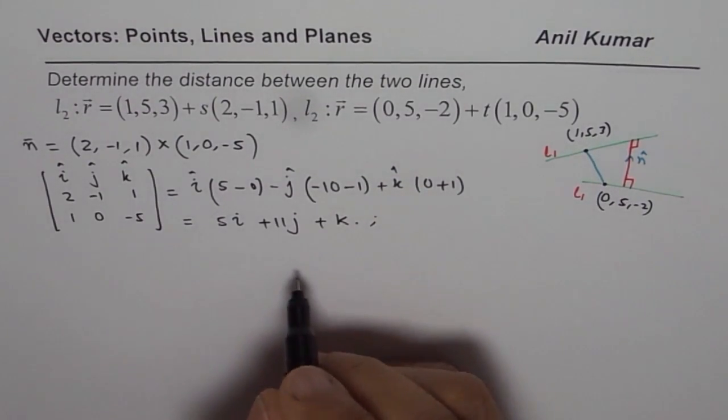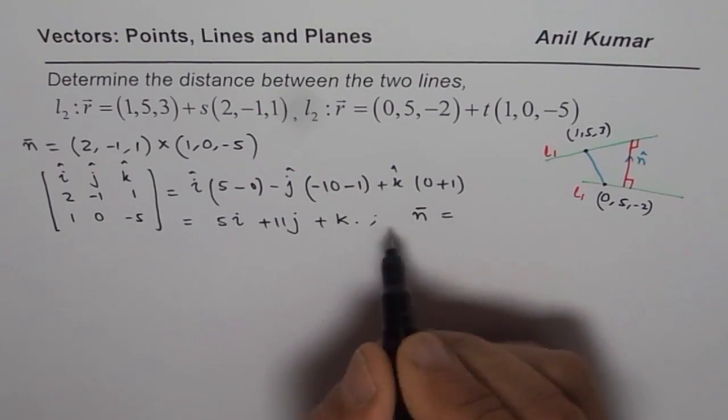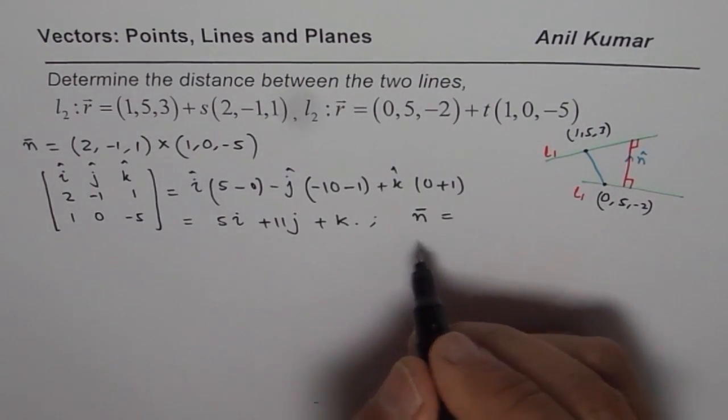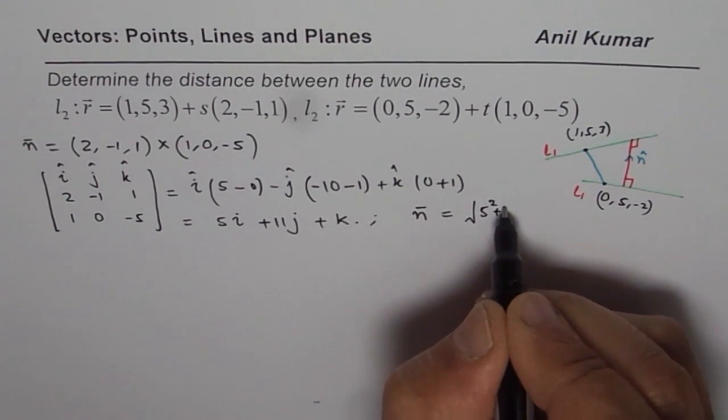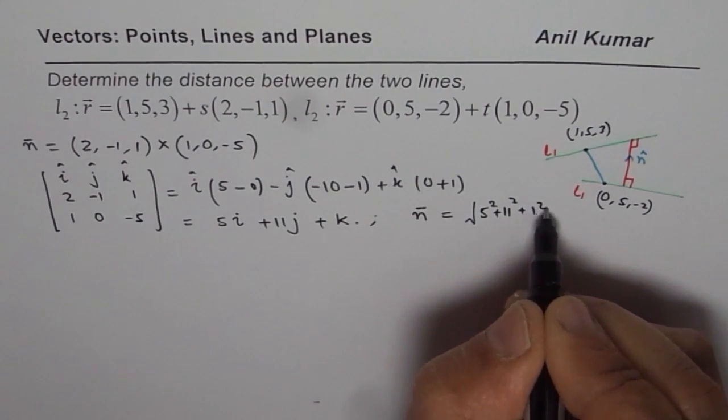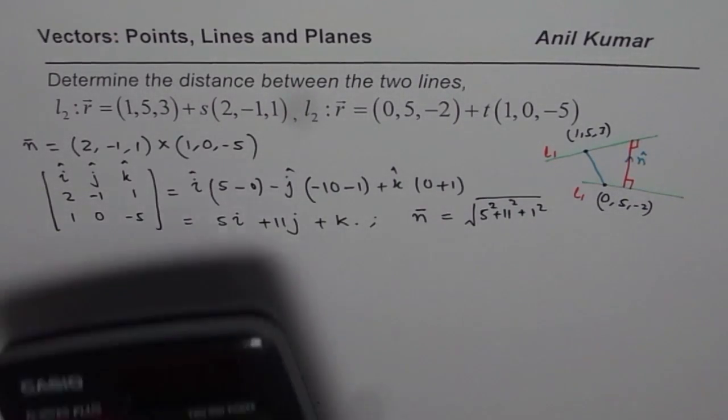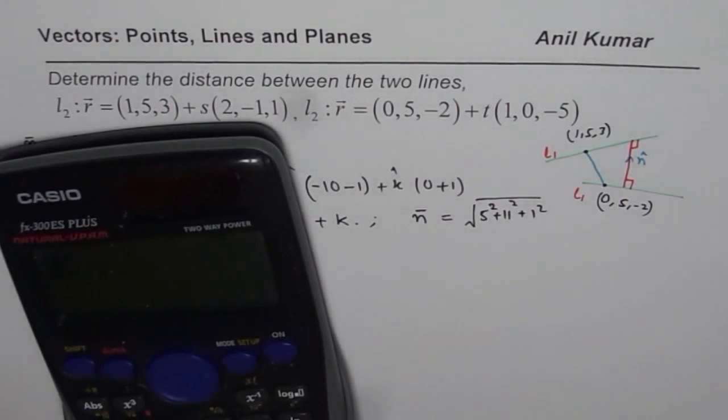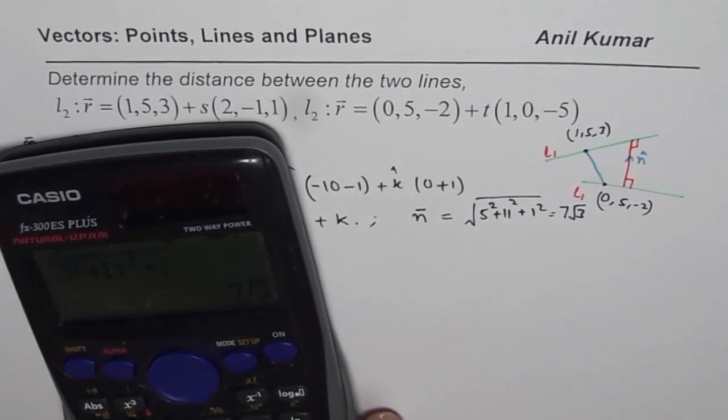So, that is the vector n and we can now find magnitude of this vector, which is normal to both. So, the magnitude will be square root of 5² plus 11² plus 1². Let us use calculator to find the magnitude also. Square root of 5² plus 11² plus 1, which is equal to 7√3. So, that is the magnitude.